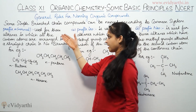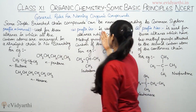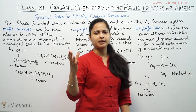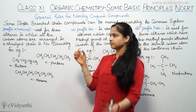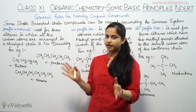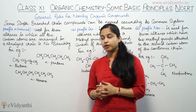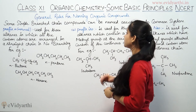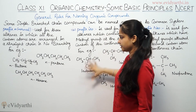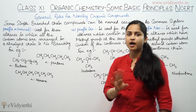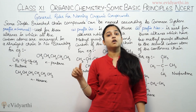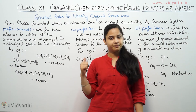All these things — prefix N that is normal, prefix ISO, prefix Neo — I have told you in some previous videos. Now I am just summing up all three and want to tell you something regarding them. Some simple branch chain compounds can be named according to the common system. I will tell you the naming according to the common system, not IUPAC nomenclature.